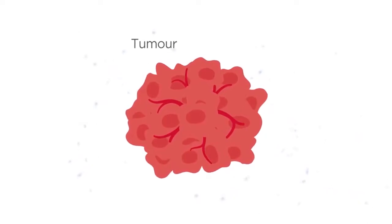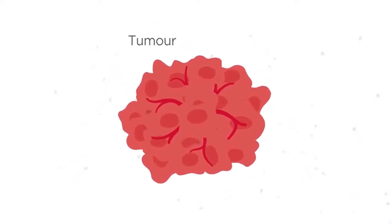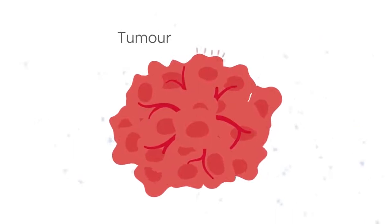Trail receptor 2, also known as death receptor 5, is widely expressed on many tumour cells.